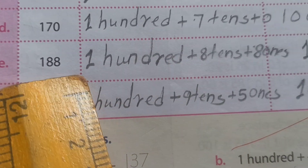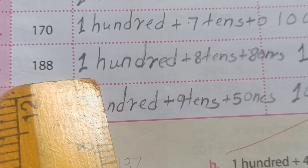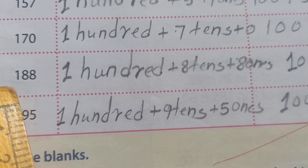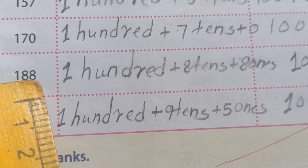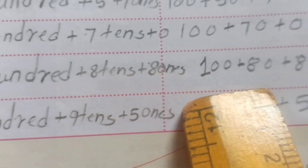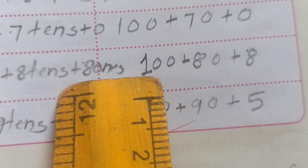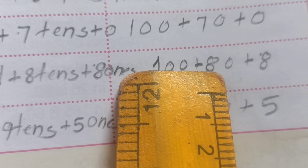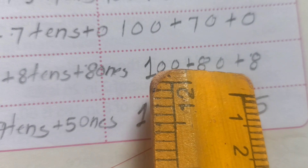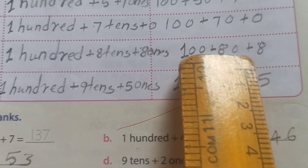E number: 188. How we expand this one number? 100 — H-U-N-D-R-E-D. 100 plus 8 tens, and 8 ones. In numerical: 100 plus 80 plus 8.